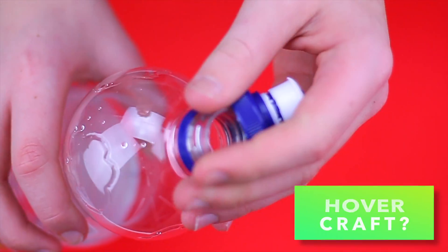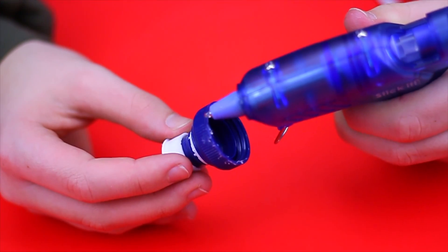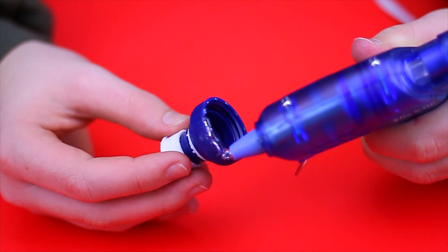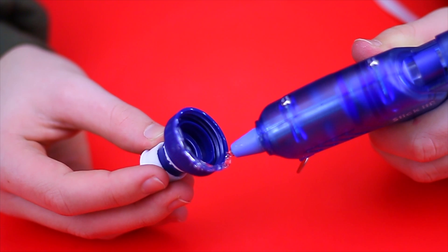Fancy a hovercraft? Take a bottle cap that can be opened and closed and looks like this one. First you need to add some hot glue around the bottle cap rim and stick it onto a CD.